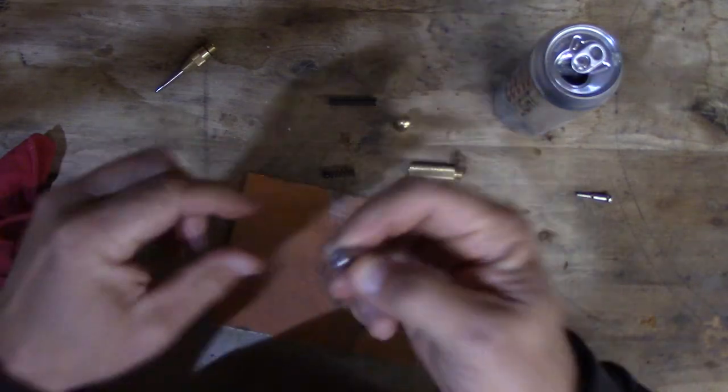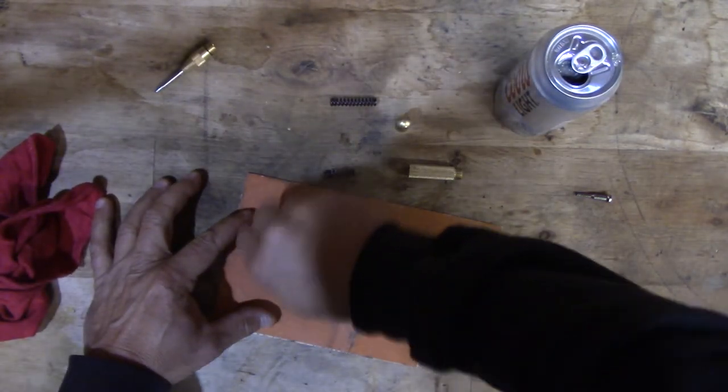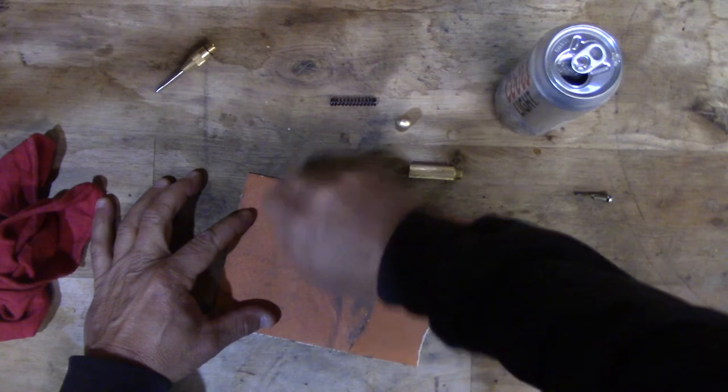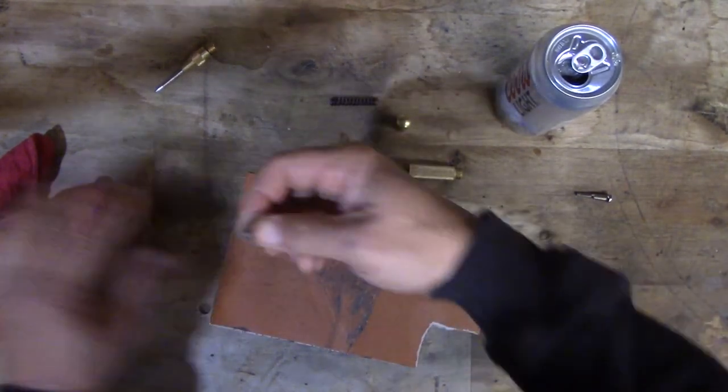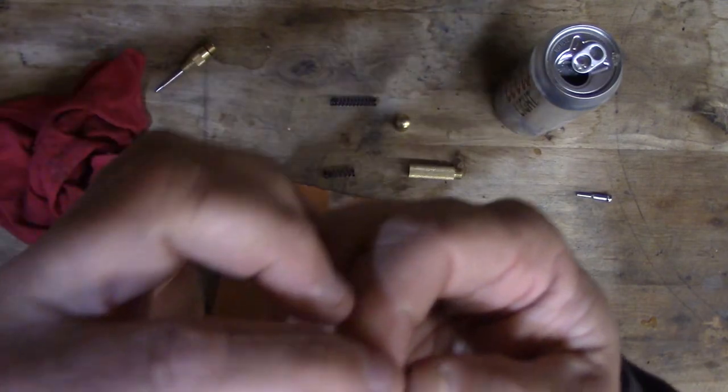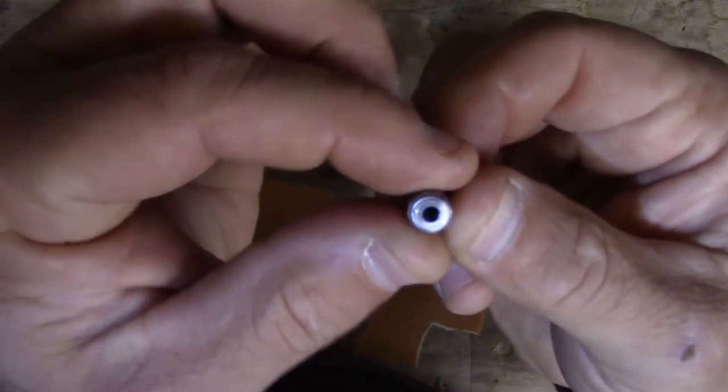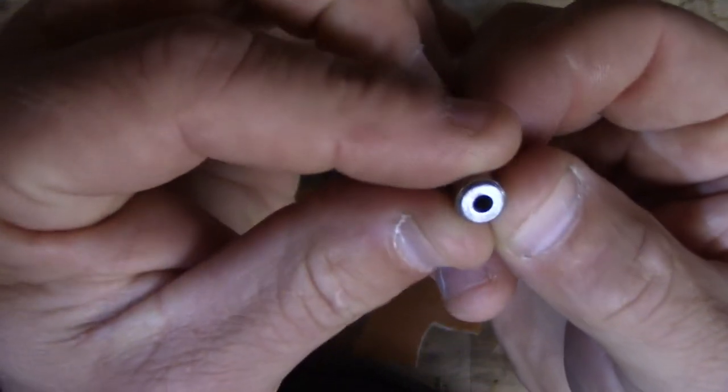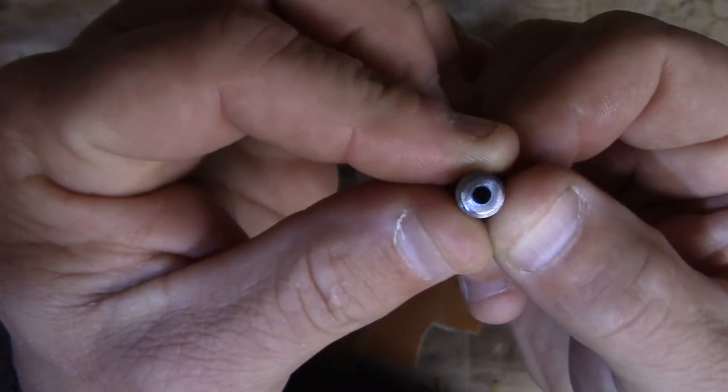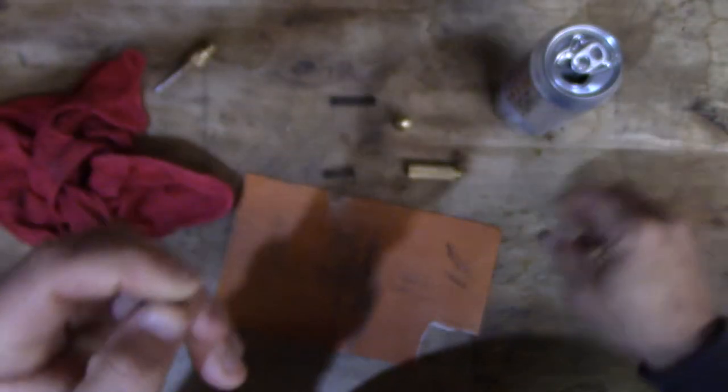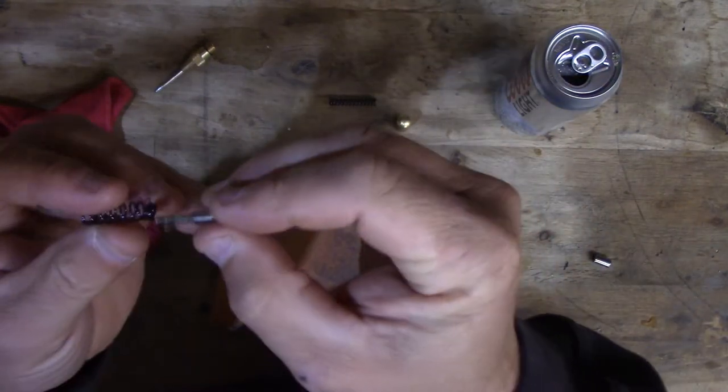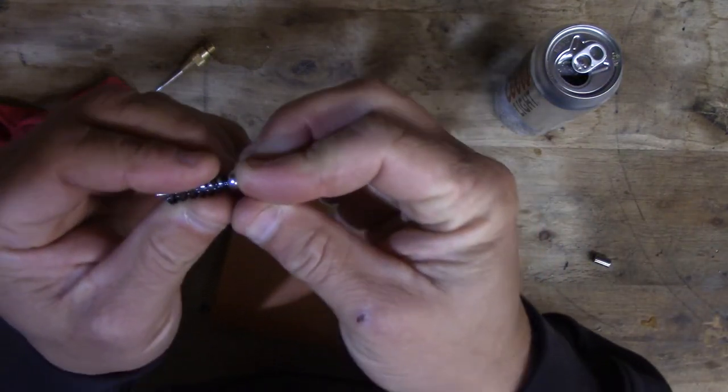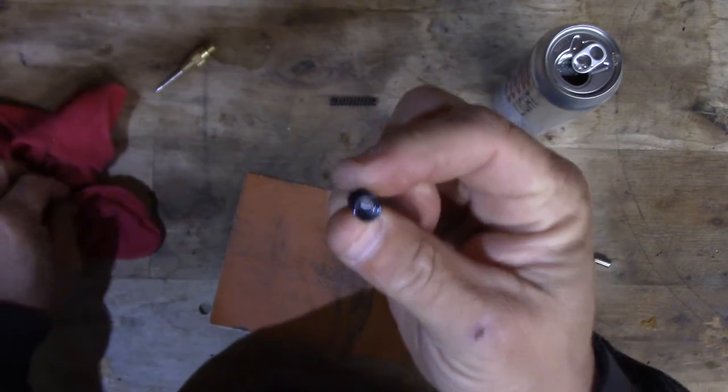Then you can take this surface here and do the same thing. Just rub it on this paper, smooth it out a little bit. It also doesn't take much and you get all the rough edges worked off of it, and it's going to work real good.